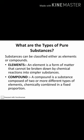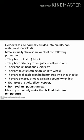Substances can be classified as elements or compounds. An element is a form of matter that cannot be broken down by physical reactions into smaller substances. A compound is a substance composed of two or more different types of elements chemically combined in a fixed proportion. Elements can be divided into metals, non-metals, and metalloids.